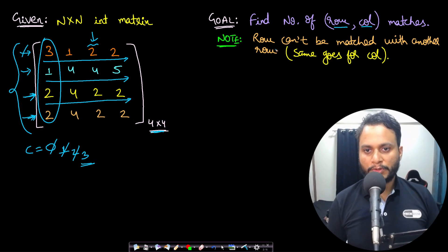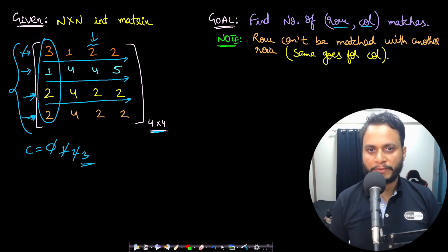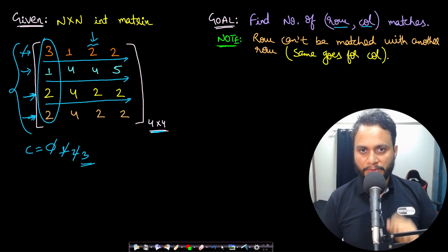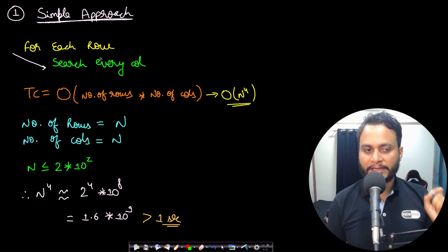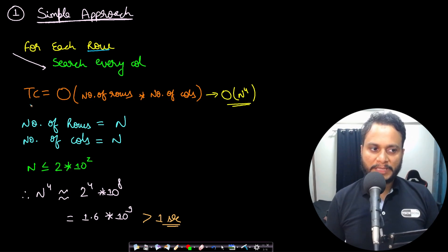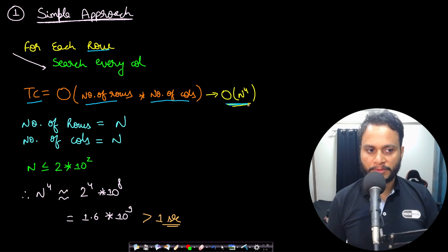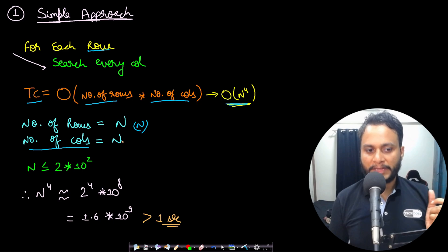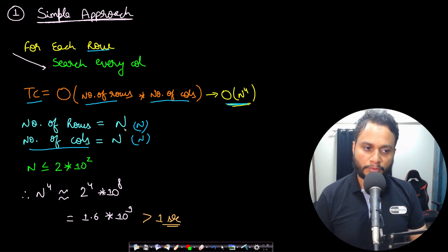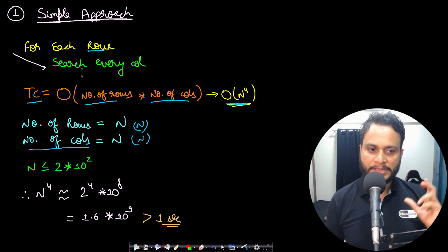You need to remember that you cannot match two different rows or two different columns — a row must always be matched with a column. Using the simple approach, we pick each row and iterate over every column to find how many columns exactly match the given row. The time complexity in this case is O(number of rows × number of columns), which comes out to O(n⁴), because each row has n items and each column also has n elements.